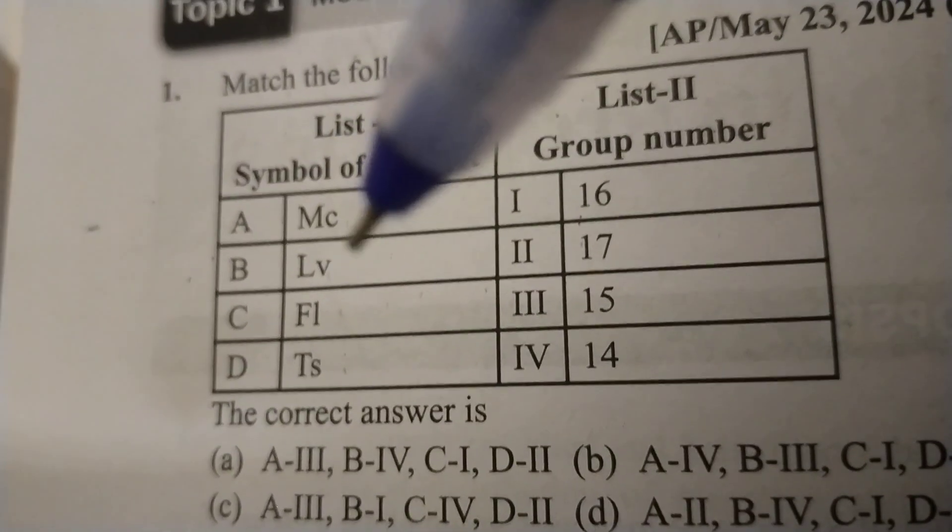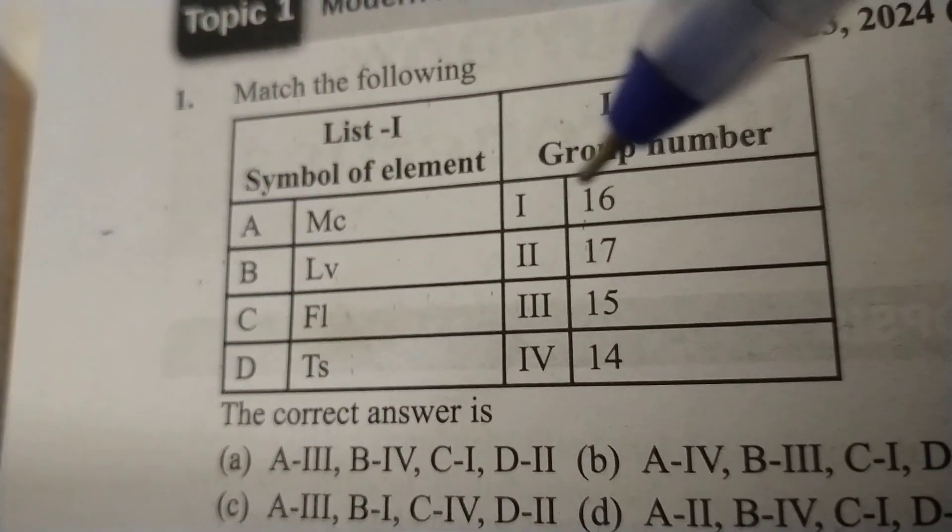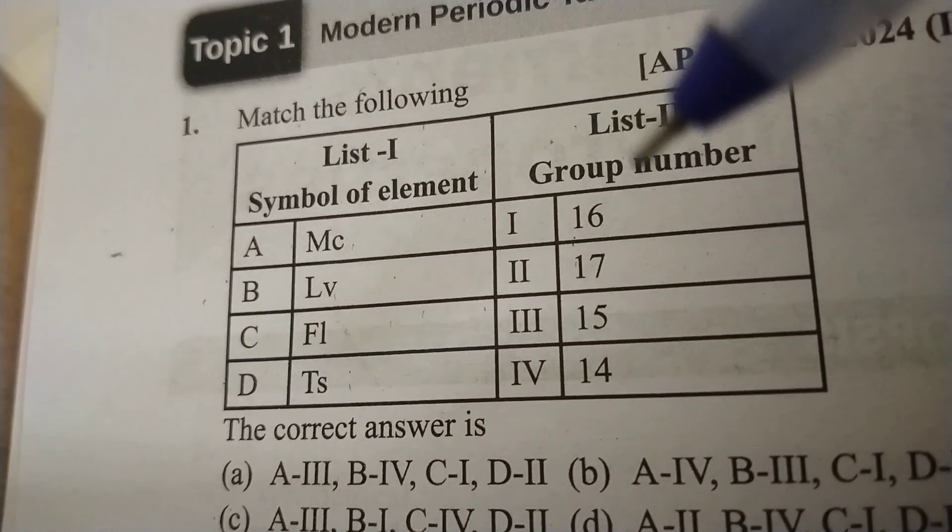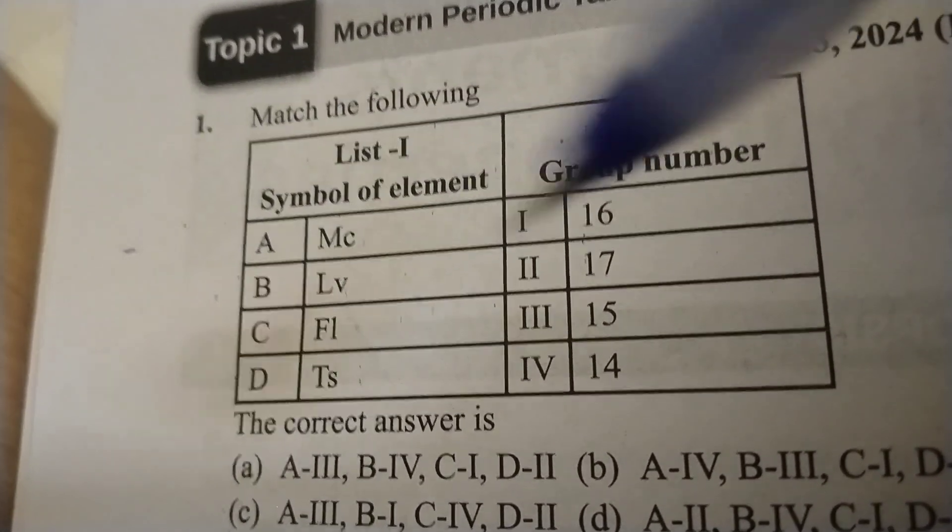number 116. So 16th group element, oxygen family - please note it. Chalcogens, we can say chalcogens, 16th group family.